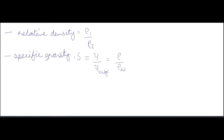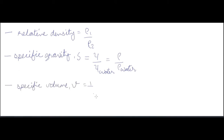Relative density is the density of one substance relative to another. Specific gravity is relative density with respect to water: specific gravity = weight density of the liquid divided by weight density of water, which simplifies to rho_liquid / rho_water since g cancels out. Specific volume is volume per unit mass, equal to 1/density.